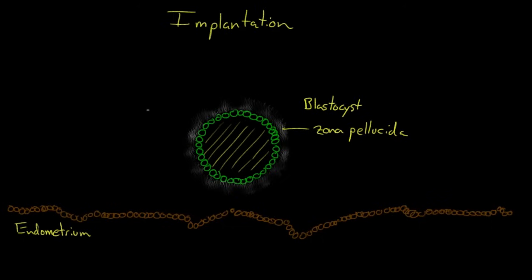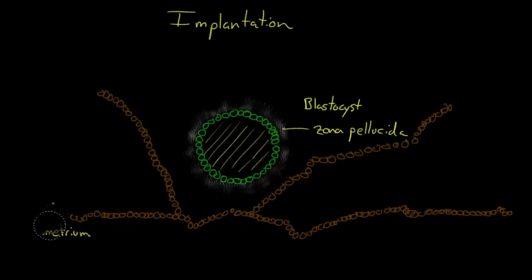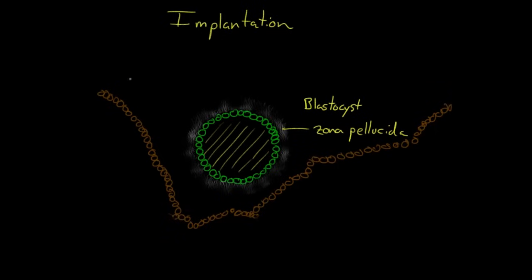But the endometrium isn't sitting still either. In fact, it's anticipating your arrival, and the endometrial lining is proliferating. It's developing these valleys here, and you come to rest in one of these valleys. That's called a crypt.